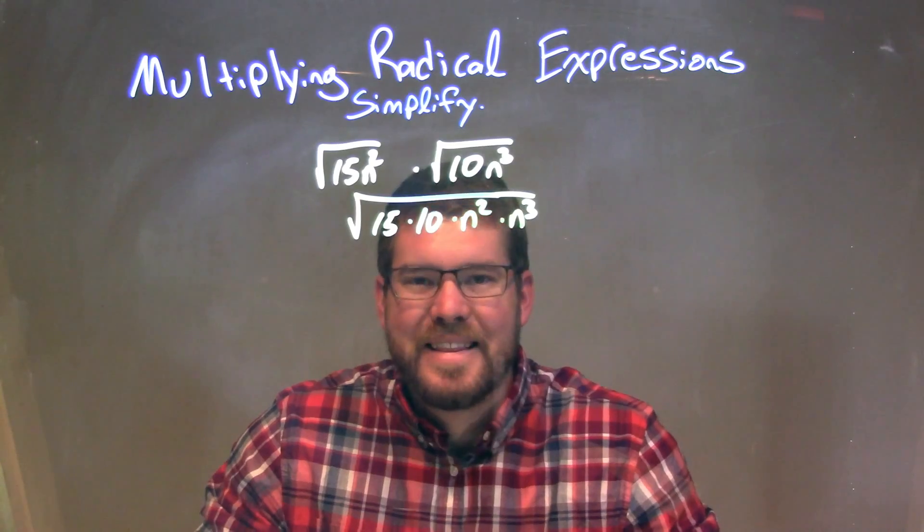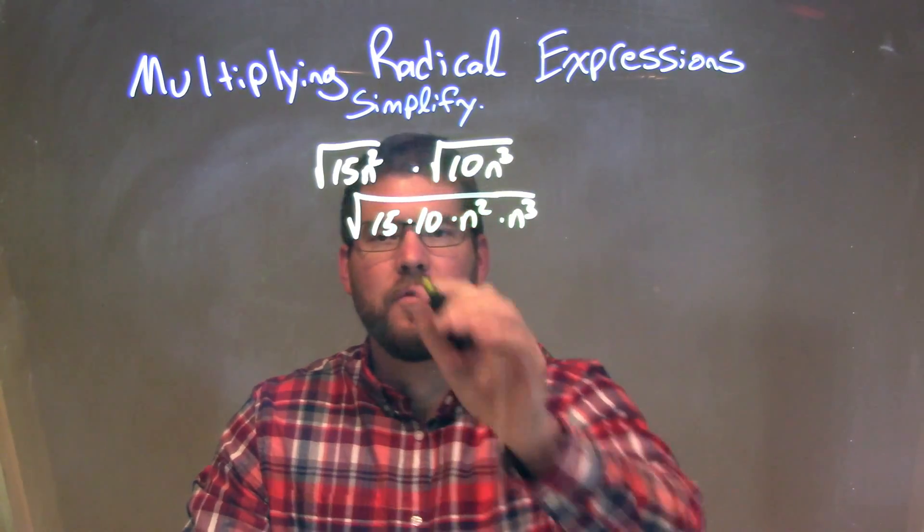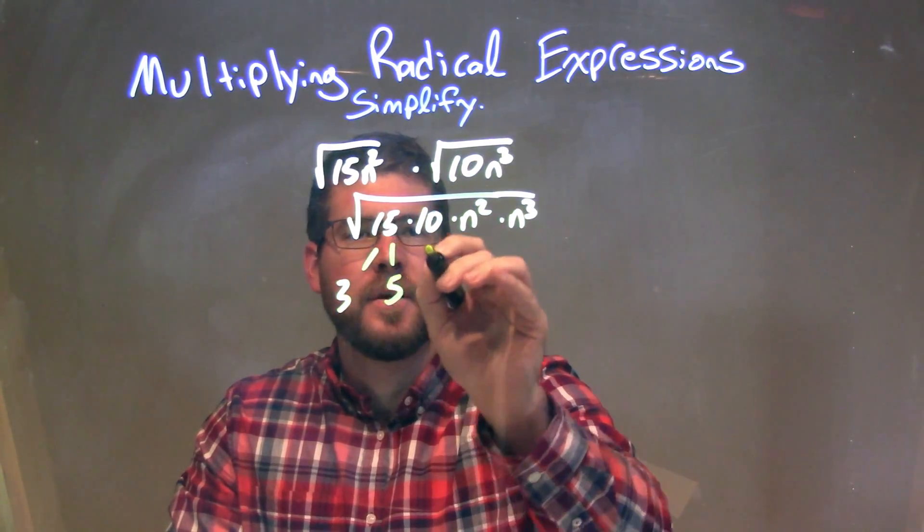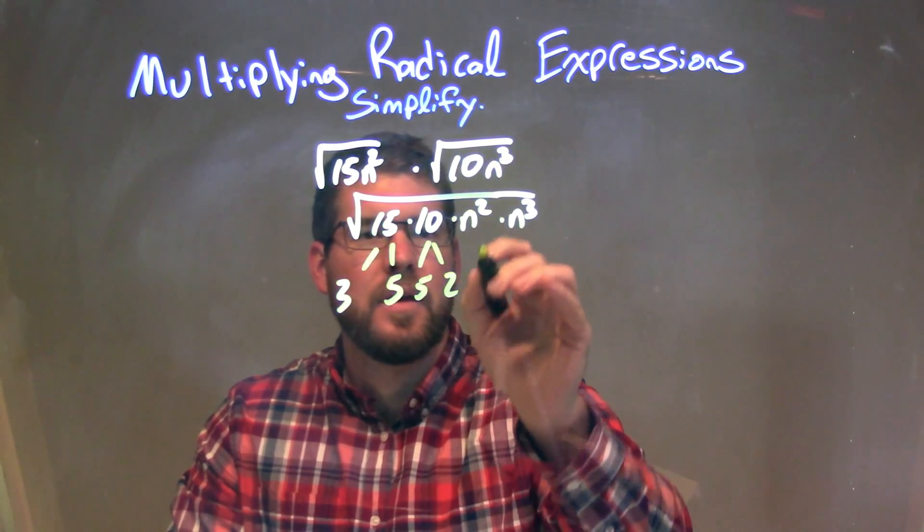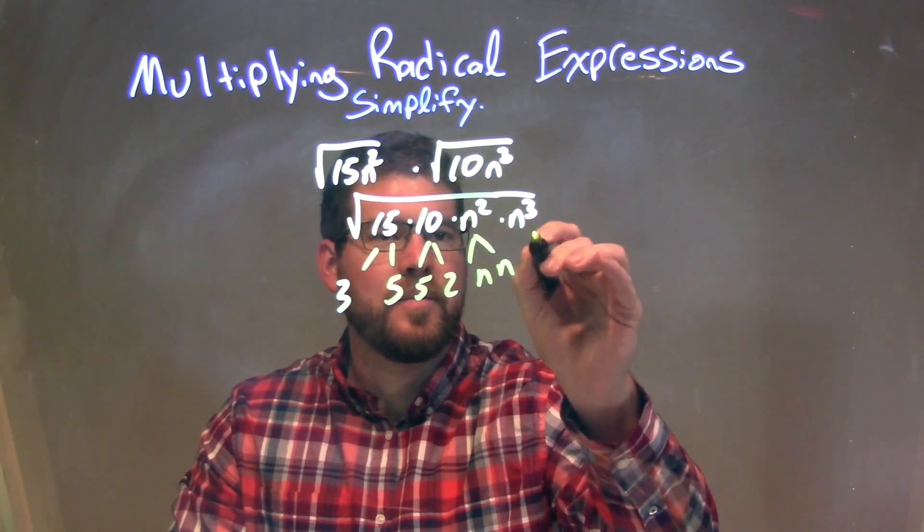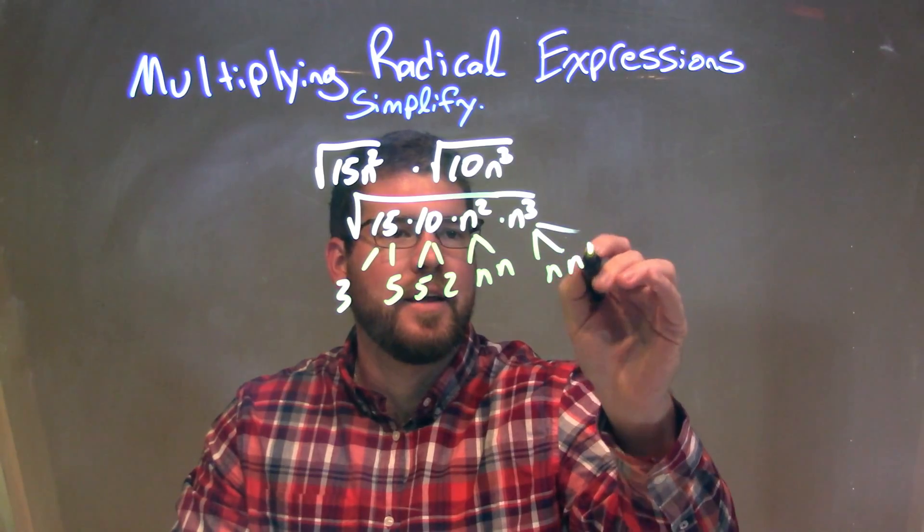So now we want to break each part down. 15 is 3 times 5, 10 is 5 times 2, n squared is n times n, and n to the third is n, n, n.